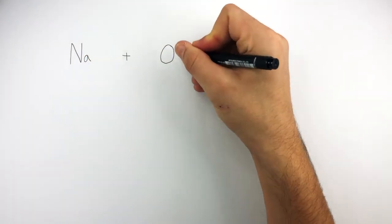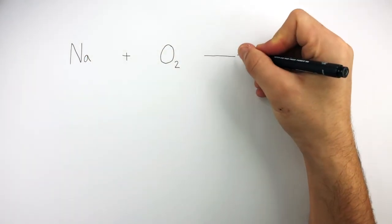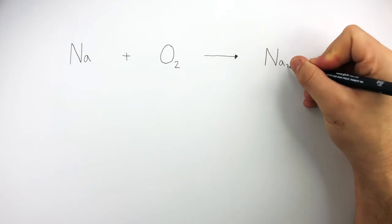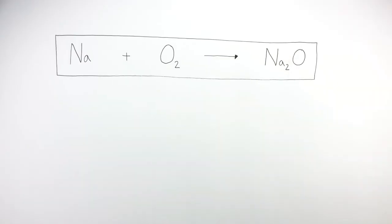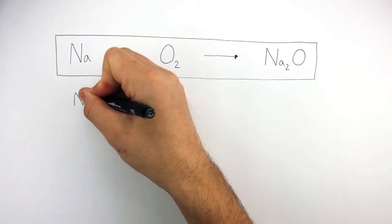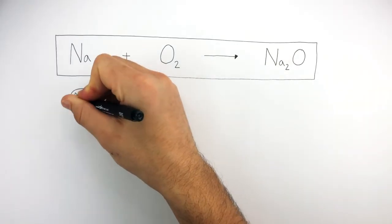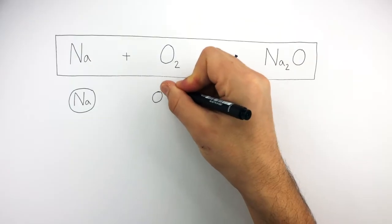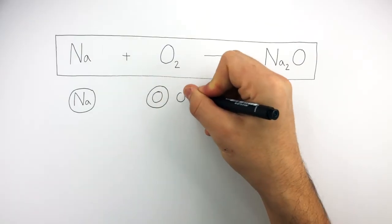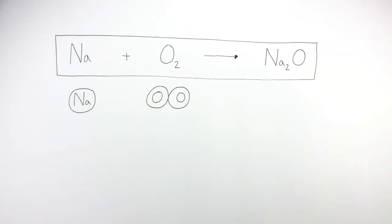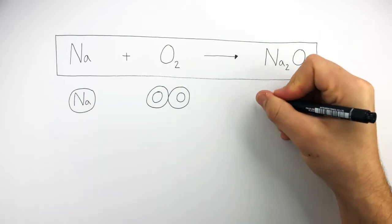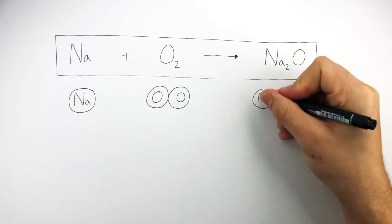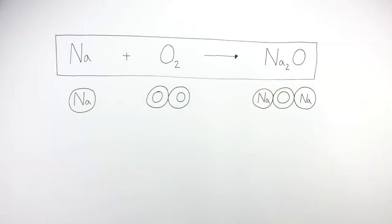Na plus O₂ reacts to form Na₂O. The symbol equation tells us there is one sodium atom on the left, one oxygen molecule on the left consisting of two oxygen atoms, and one sodium oxide compound on the right consisting of one oxygen atom and two sodium atoms.